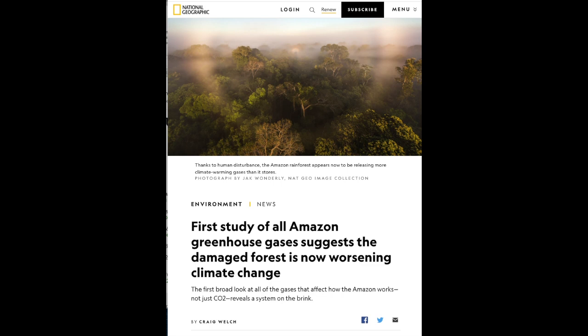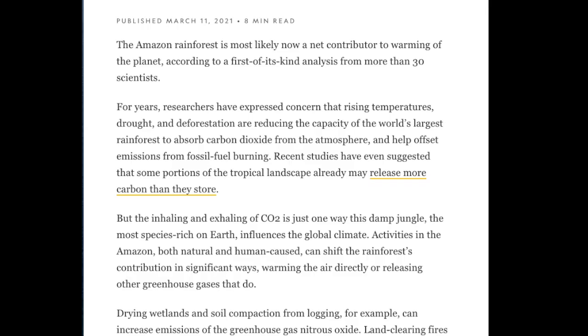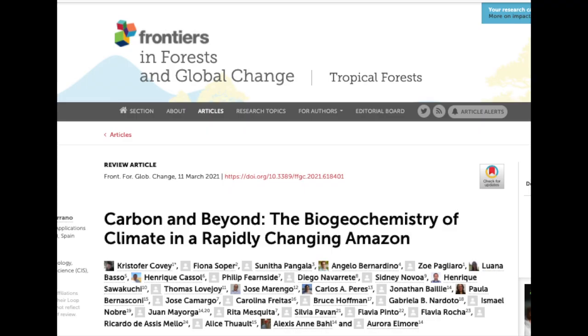The Amazon, here's the lead: The Amazon rainforest is most likely now a net contributor to warming of the planet according to a first-of-a-kind analysis from more than 30 scientists. Into the paper now, the research published in Frontiers in Forests and Global Change estimates that atmospheric warming from all the sources combined now appears to swamp the forest's natural cooling effect.